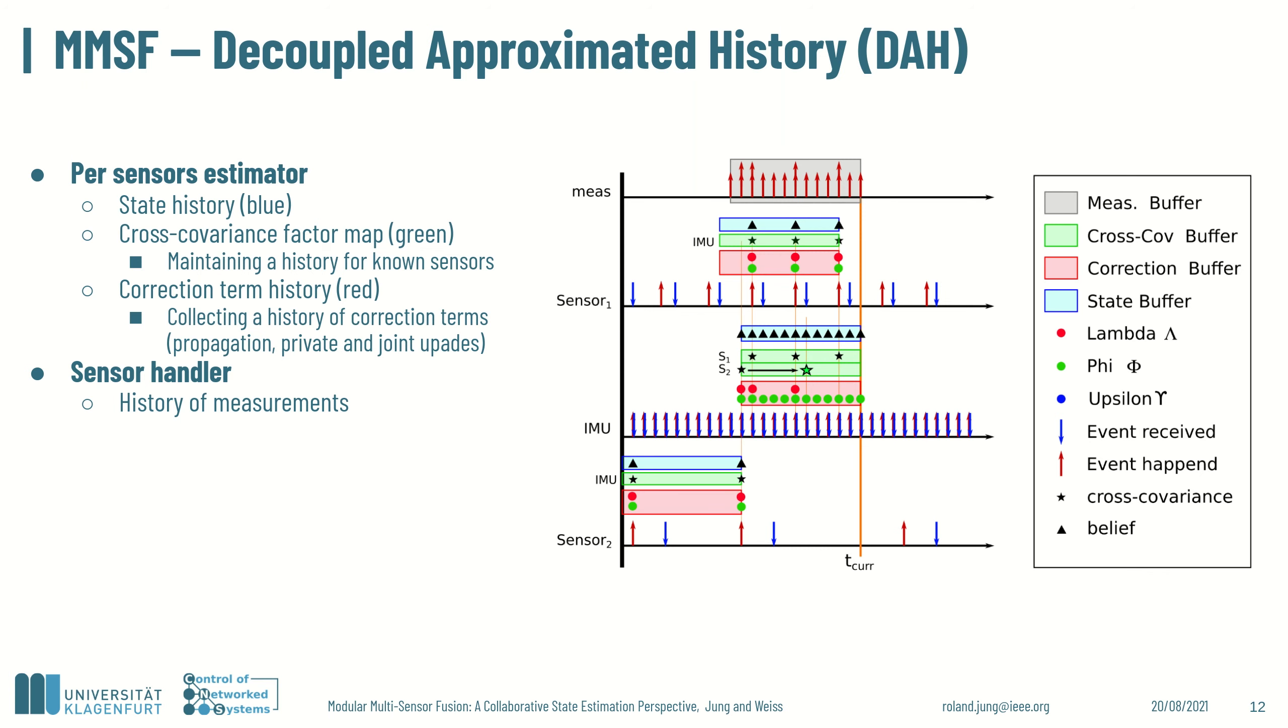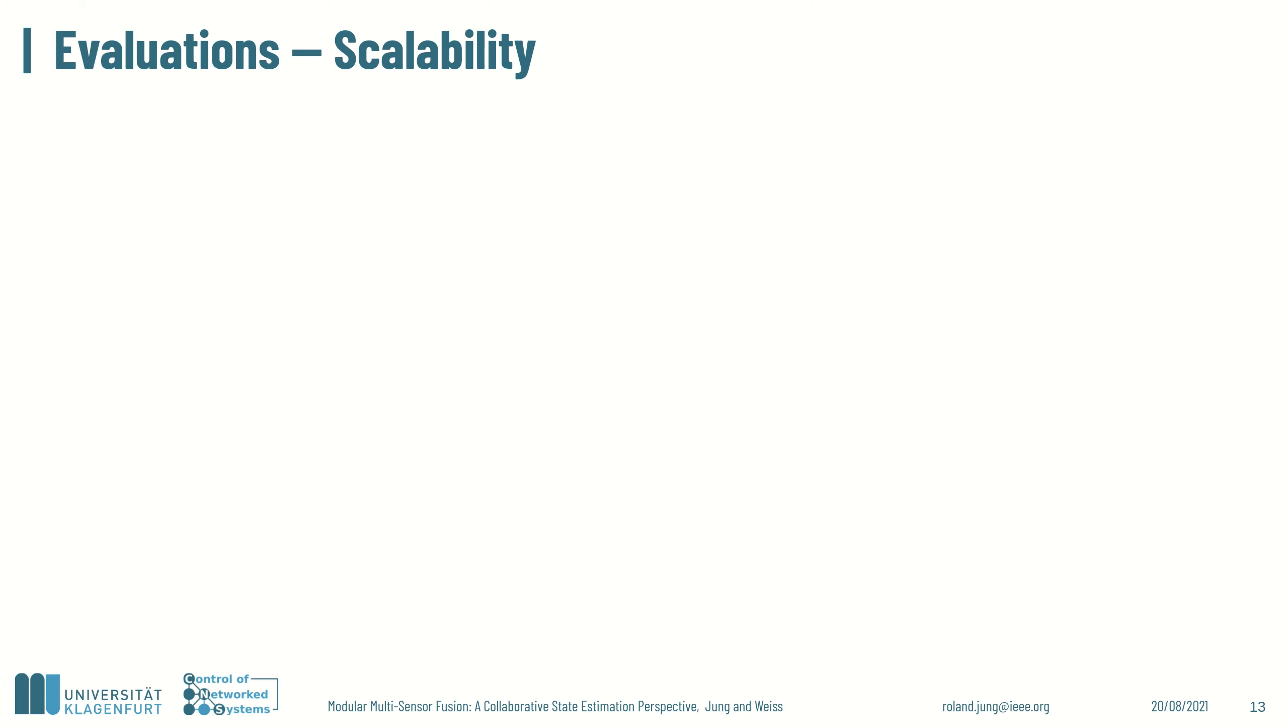As the buffers have a fixed time horizon and updates between sensors can happen rarely, it must be ensured that the information does not fall outside this horizon. In the figure, we show how a cross-covariance factor is maintained. The propagation sensor, the IMU, has to forward propagate the cross-covariance factor referring to sensor 2 using elements from the correction buffer in red. This means, if a sensor suffers from outages or the period of updates is larger than the buffer history, a sporadic maintenance has to be performed. We evaluated the scalability of the individual approaches by first increasing the number of sensors and second by increasing the sensor delay.